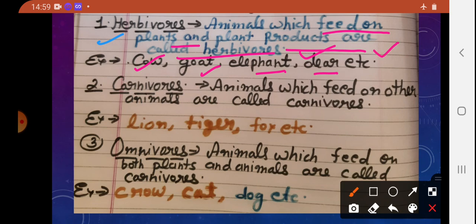Second category: Carnivores. Animals which feed on other animals are called carnivores. Examples like lion, tiger, fox. These are carnivores, meaning meat-eaters.